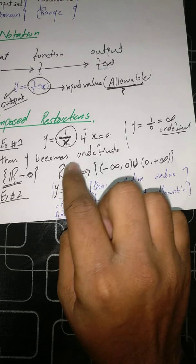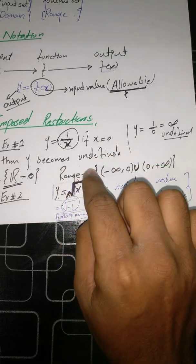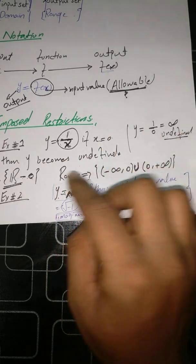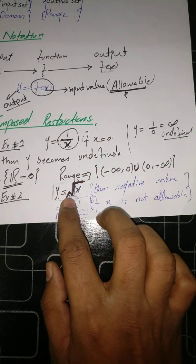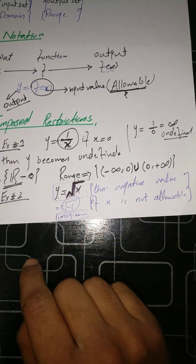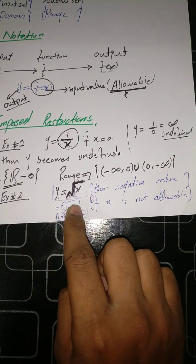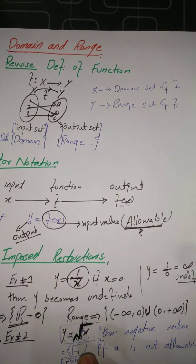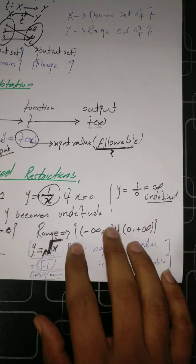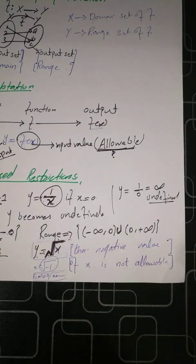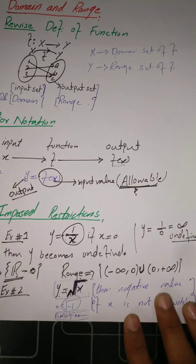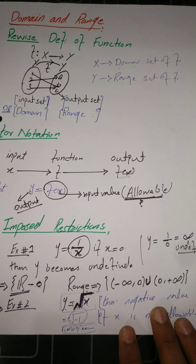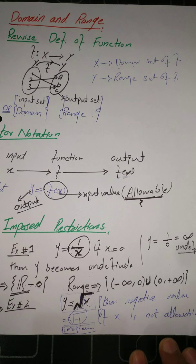In summary, there are two restrictions to find the domain and range of a function. First, in a division form, we ensure the expression is defined — we do not allow values that make the expression undefined. Second, for square root terms, the value under the square root must be positive. In my next lecture I will discuss more examples of how to find domain and range. Thank you for watching — if you found this informative, please subscribe to my channel and press the notification button.